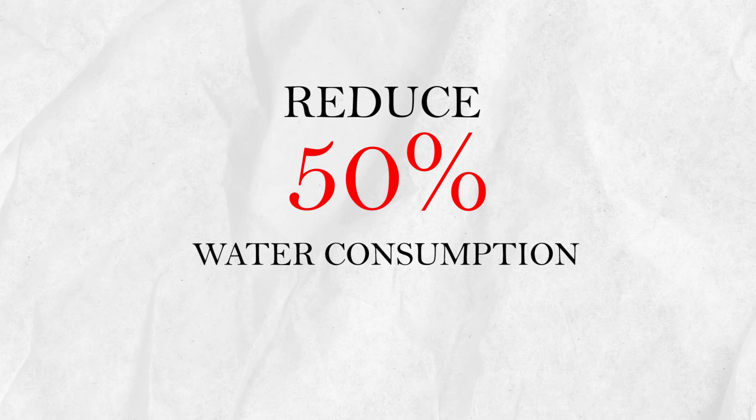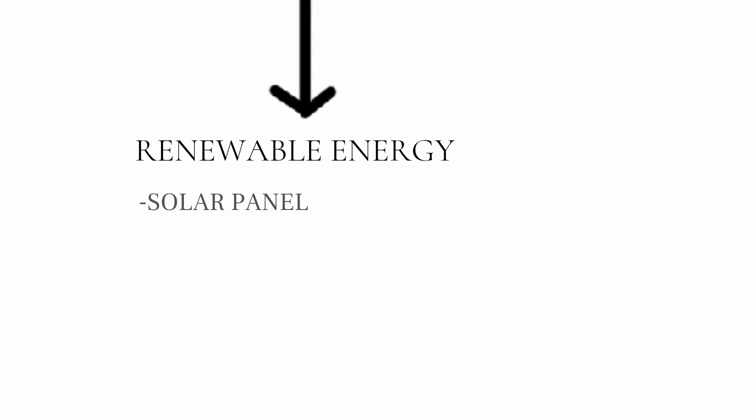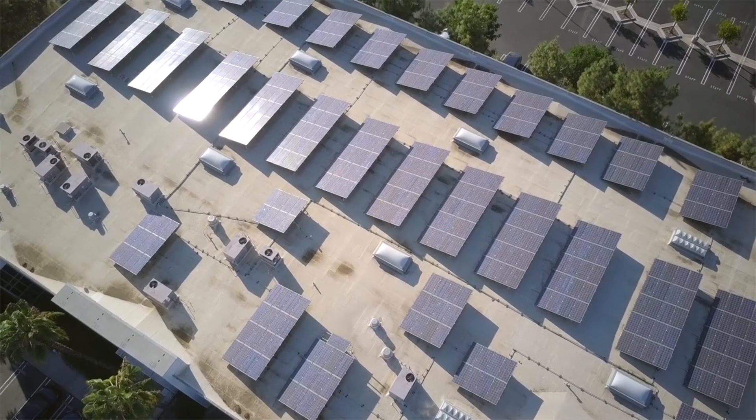Through this system, it reduced 50% water consumption. The last part is renewable energy. The building-integrated photovoltaic power plant has been installed to meet the energy demand of the building with clean and green renewable energy.